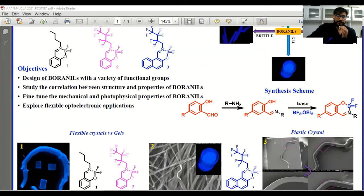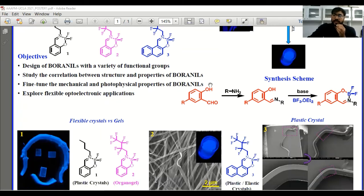Can we use these materials for flexible optoelectronic properties? Because these crystals show flexibility. This is the reaction scheme - a two-step reaction where we first make the Schiff basis and then form the boron complexes.